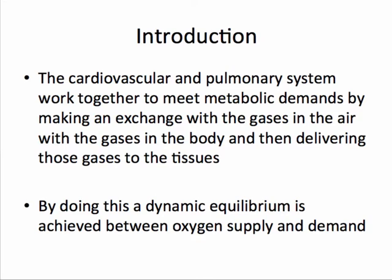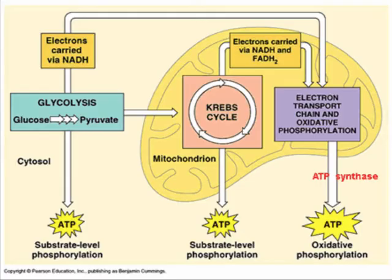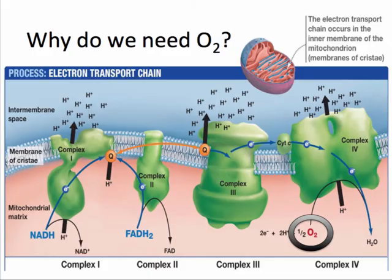So why exactly do we need oxygen? For the following physiology and pathophysiology, just relax and listen. This content will not be on the exam but will give you an idea of the importance of oxygen. During cellular respiration, we break down glucose through a series of steps ultimately resulting in ATP formation. During the final step, the electron transport chain, we synthesize the highest yield of adenosine triphosphate.